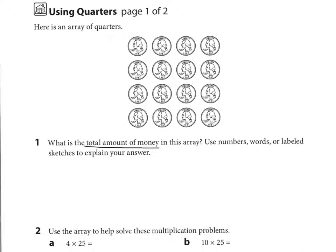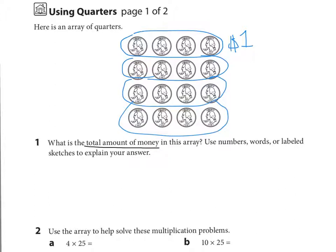One way I look at the array is I can see up top we have four quarters, and I know four quarters equals one dollar. And so how many sets of four quarters do we have? We have one, two, three, four sets. So how much money is it? Four dollars. So you can write that showing in numbers, in words, or as a sketch to explain that the total amount is four dollars.